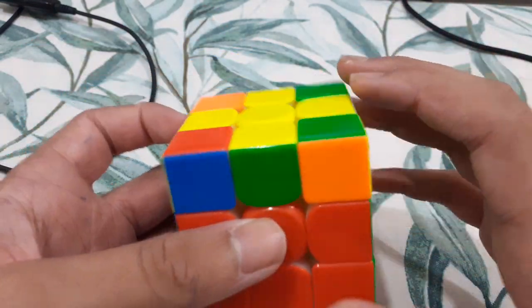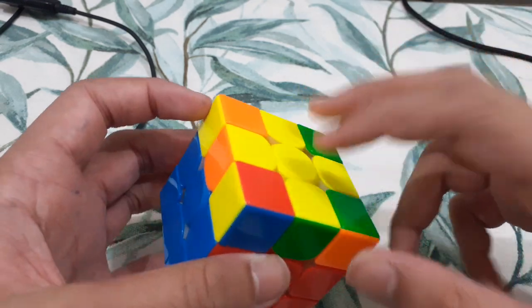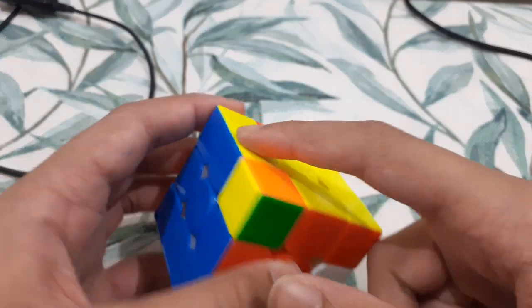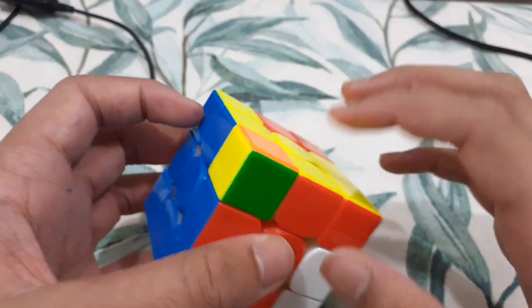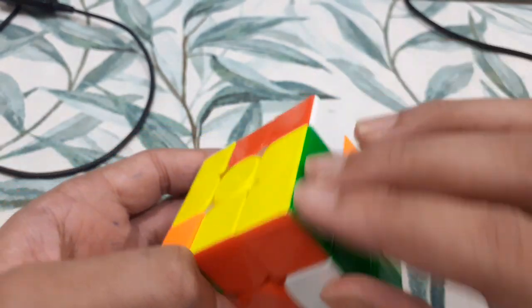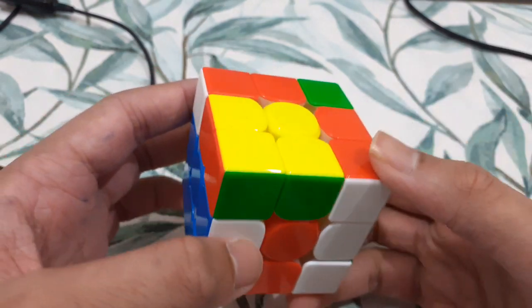Here, I saw this really easy COLL, where these two are the same and these two are opposite. At this point, I could tell that it could have been a skip because there was this block and this block. I didn't really see this until this move, and here I knew it was going to be a skip.